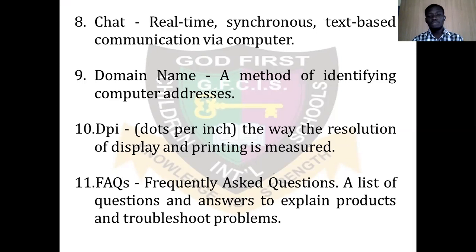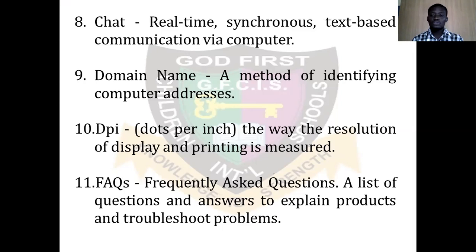Number nine is the domain name. A domain name is a method of identifying computer addresses on the internet. For example, Godfors School has a domain name: www.godforschools.com. So if you are looking for information about Godfors School online, you go to their domain name, type it in the address bar, and you will be directed to that particular site.